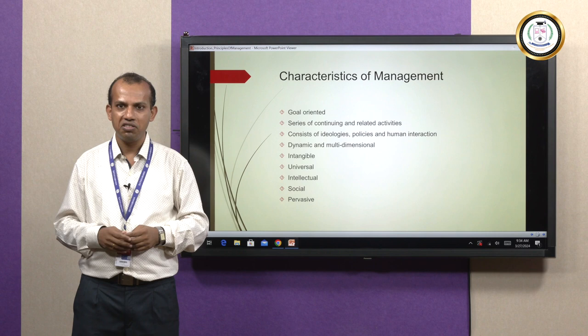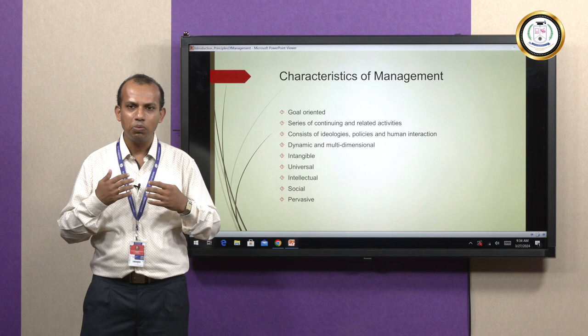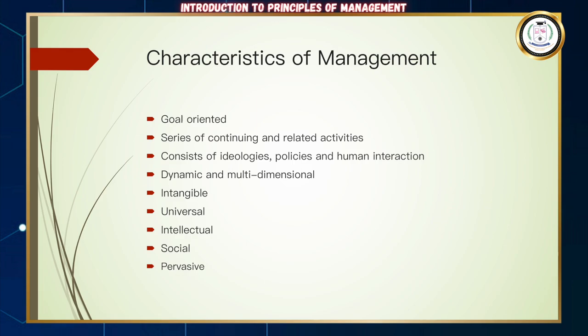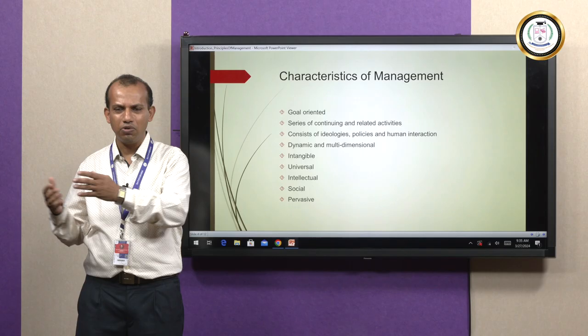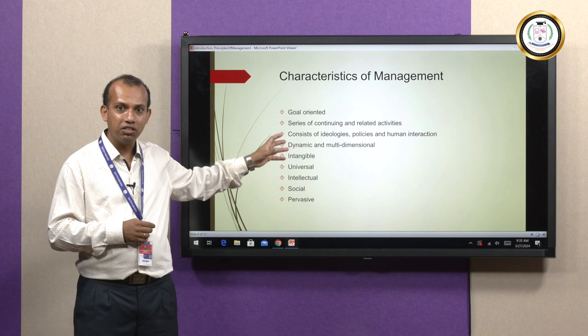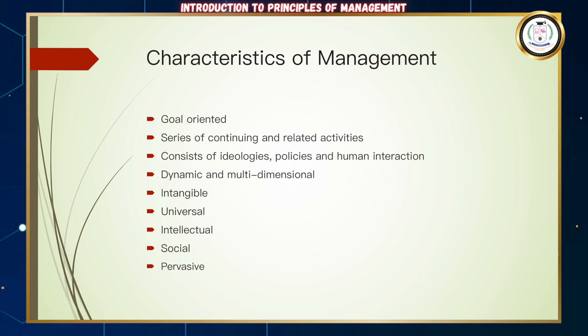Goals can be rolled up to the organization level, depending on the structure of the organization. Everyone in that organization should be working towards achieving those goals or objectives. It's a series of continuing and related activities — all these different functions like planning, organizing, staffing, and budgeting are never-ending, always interrelated, and should not be looked at very distinctively. It consists of ideologies, policies, and human interaction.